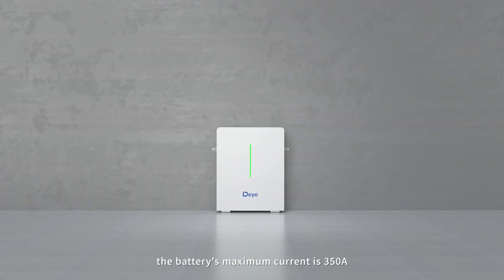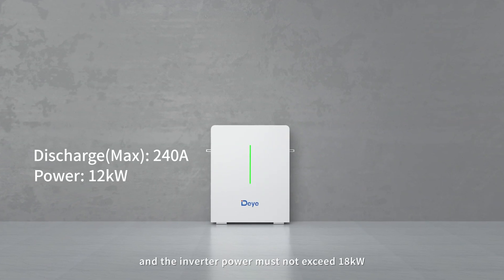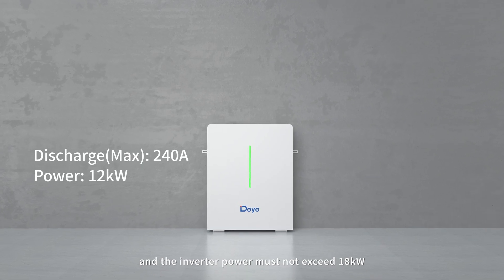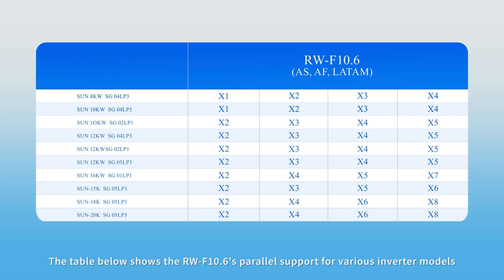Please note the battery's maximum current is 350 amperes and the inverter power must not exceed 18 kilowatts. The table below shows the RW-F10.6's parallel support for various inverter models and the number of battery packs for one to four hour applications.